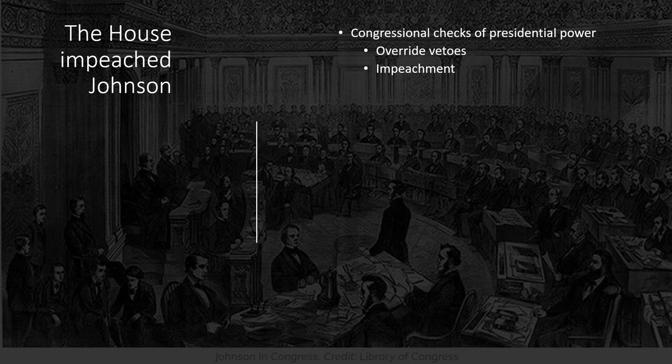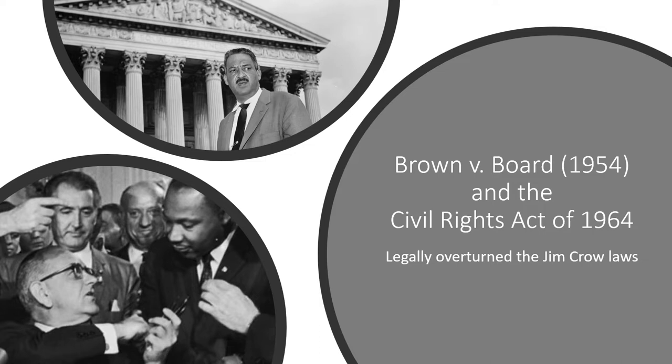That impeachment power also extends to federal judges. The founders had intended that Congress was the dominant branch, but that all three were important to be able to check and balance one another to prevent one branch from becoming too powerful. By 1877, Congressional Reconstruction had ended.